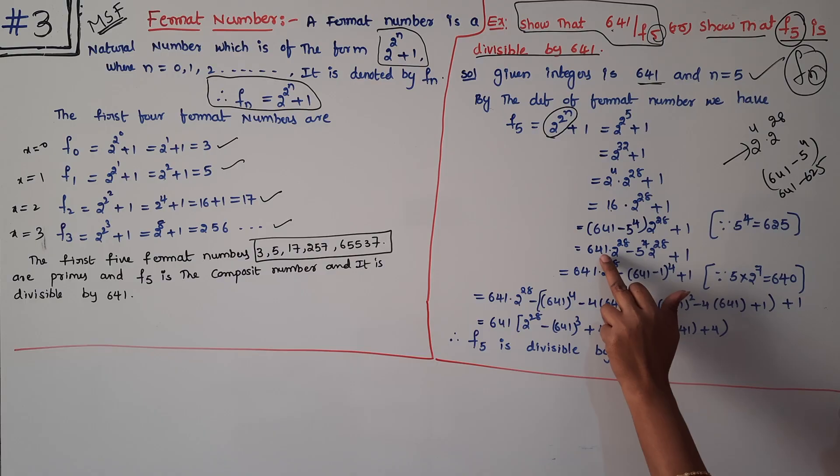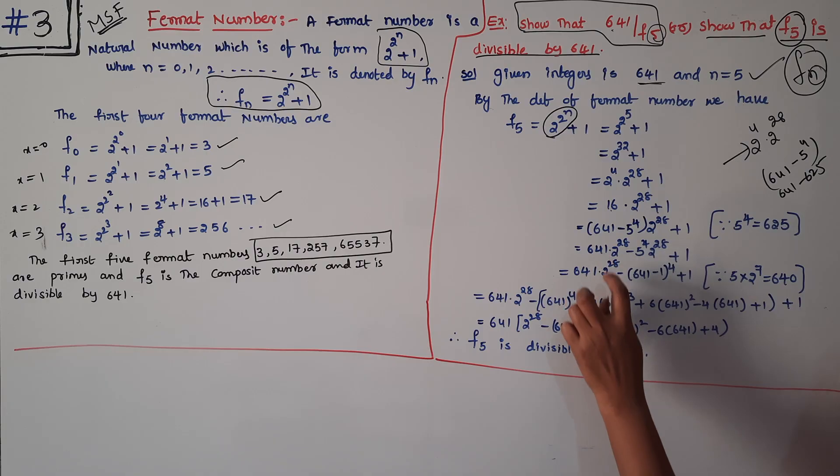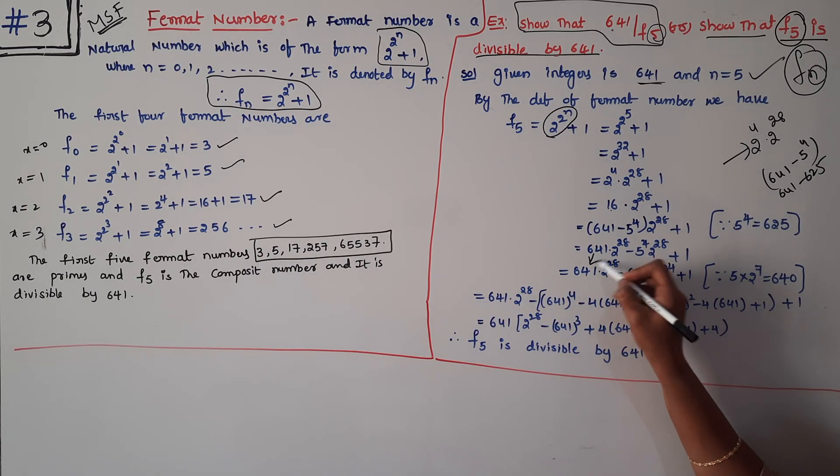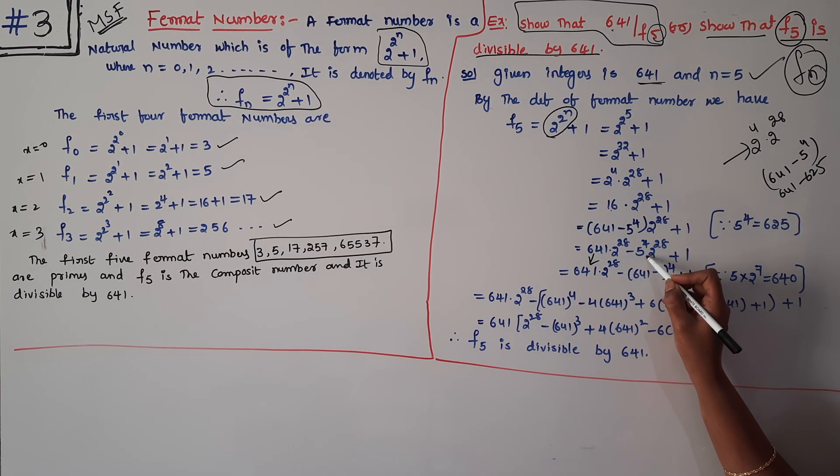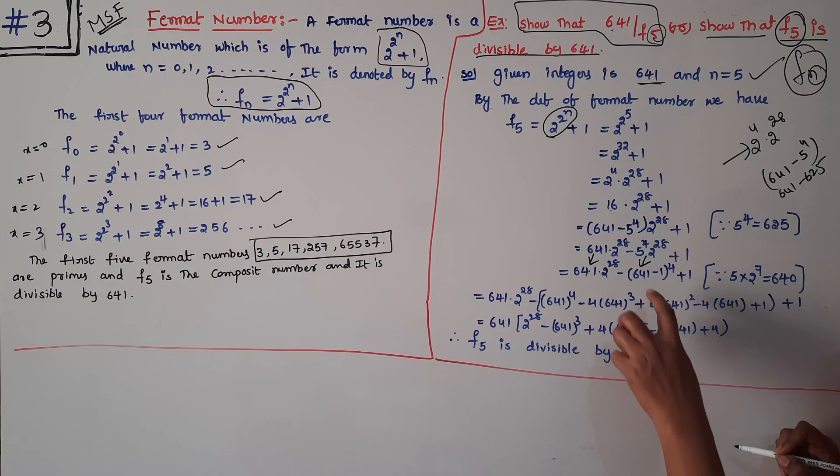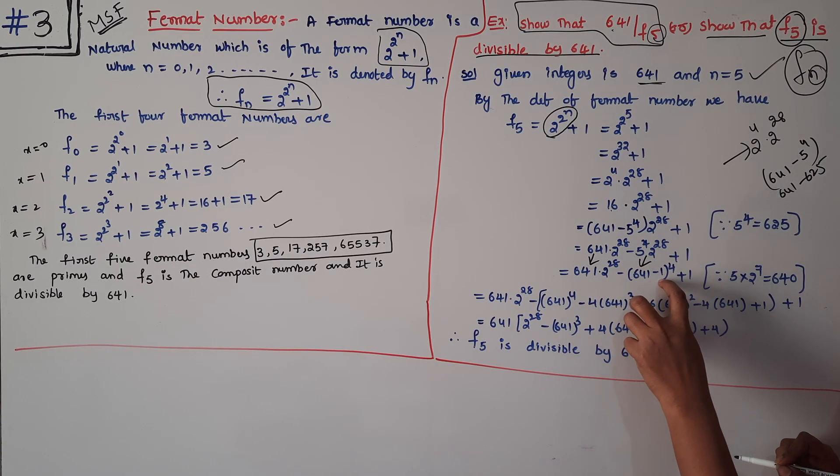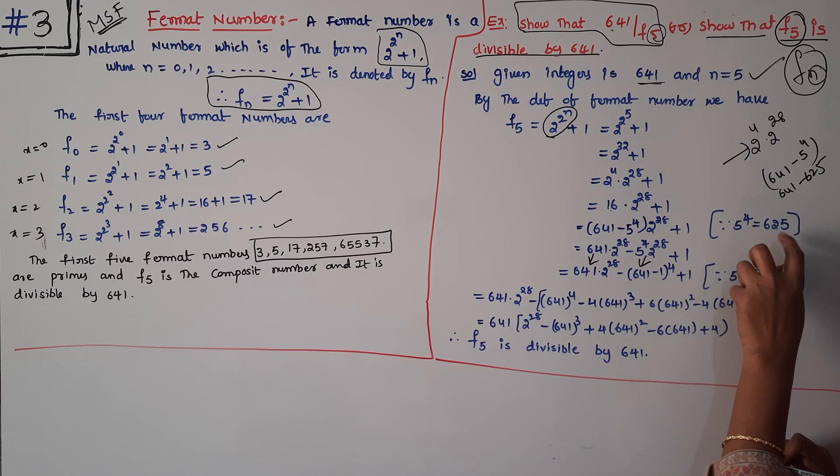So 2^32 + 1 = 2^4 × 2^28 + 1. Now I will say this times this, multiplying the terms. I will say this term as it is, and I will say this term in terms of (641 - 1)^4. I will simplify.